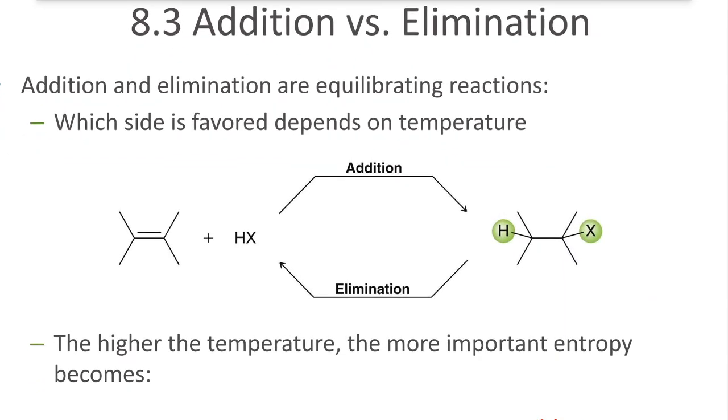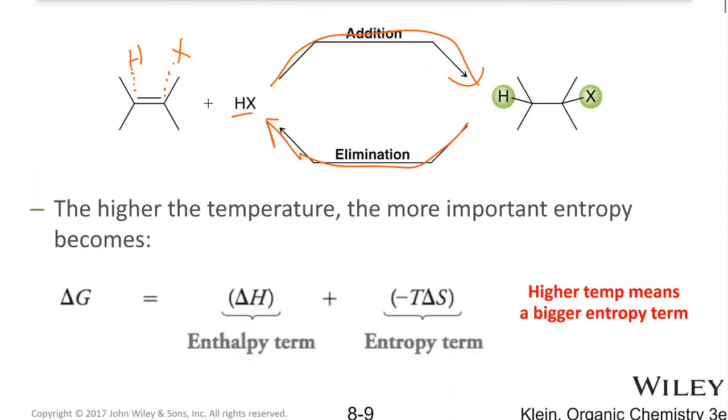So addition and elimination reactions are the reverse of each other. If we add something across a double bond, so in this case, we're adding H to one side of the double bond and X to the other side. This is not a mechanism here, but we're going to form a bond from the H to this side and we're going to form a bond from the X to this side. And through an addition reaction, we can add those things across the double bond. And through an elimination reaction, we saw that we can remove H and X to give us a double bond. So those are reversible reactions. So what determines which way to which side this reaction will lie? Well, it turns out the temperature plays an important role in that.